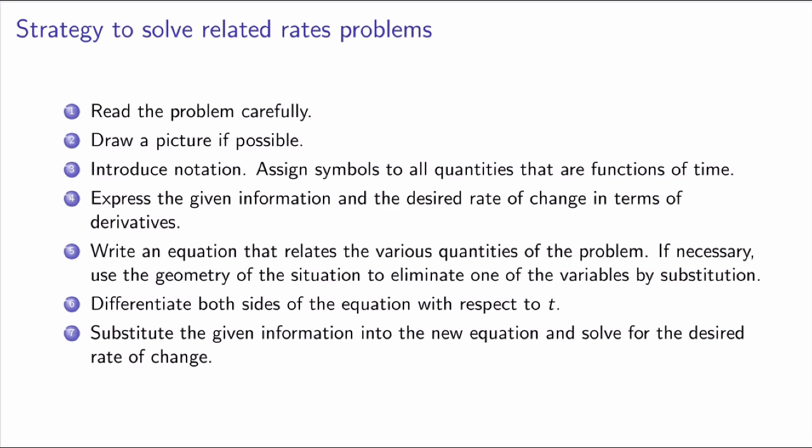Step 5: write an equation that relates the various quantities of the problem — in our case that was tan θ = h/x. Sometimes you may get two different relations and have to substitute one into the other to get a single relation. Step 6: differentiate both sides of the equation with respect to t so that you get a relation between the rates of change. Finally, step 7: substitute the given information into the new equation to solve for the desired rate of change at the particular moment of time you're interested in.